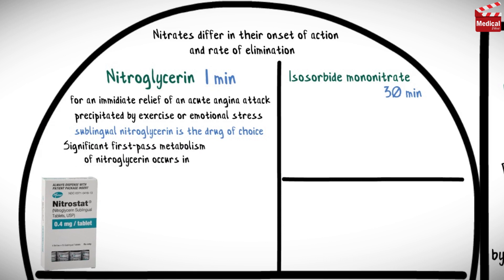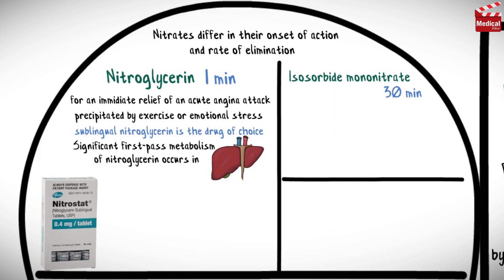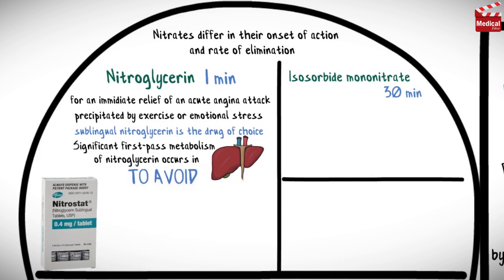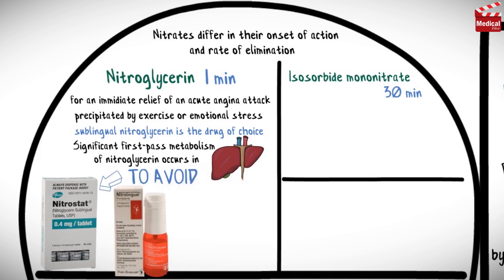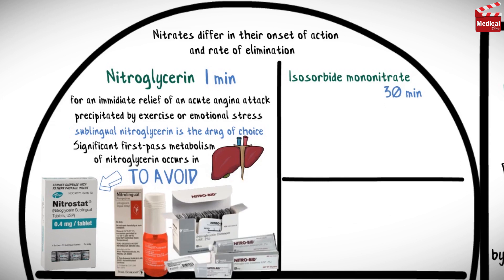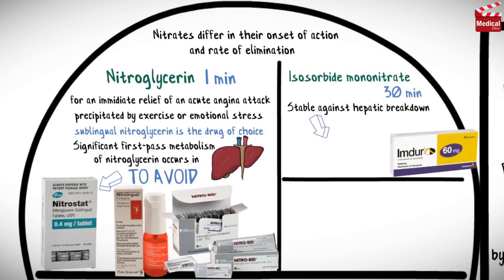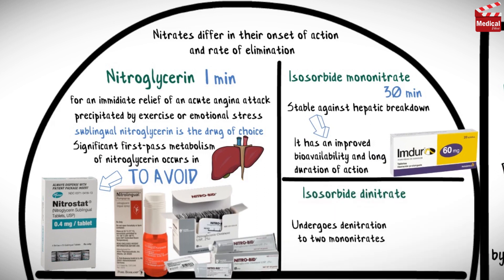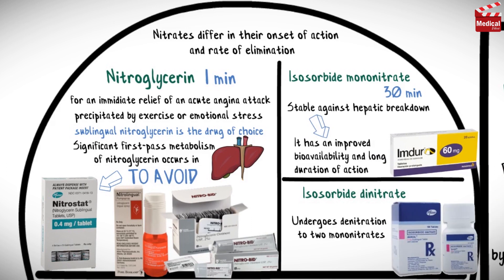It's very important for everyone who suffers from angina to have nitroglycerin tablets in their pockets for acute attacks. Significant first-pass metabolism of nitroglycerin occurs in the liver, so to avoid the hepatic first-pass effect it is commonly administered via the sublingual or transdermal route as a patch or ointment. Isosorbide mononitrate is stable against hepatic breakdown, giving it improved bioavailability and long duration of action.